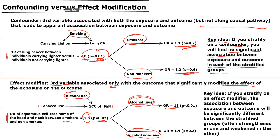Similarly, among alcohol non-users, the odds ratio has decreased such that among individuals who don't use alcohol, the risk of head and neck cancer among those who smoke is 1.4 times the odds among those who do not smoke. So among alcohol users, the effect has been greatly increased and is highly statistically significant, while among alcohol non-users, the association has diminished and is no longer statistically significant. A key idea is that if you stratify on an effect modifier, the association between the exposure and outcome will be significantly different between the stratified groups — often strengthened in one group and weakened in the other.